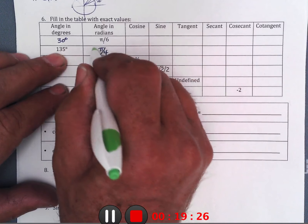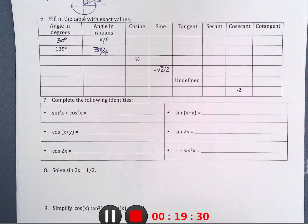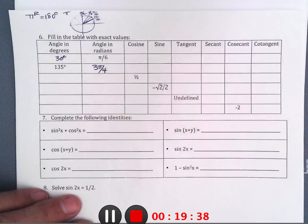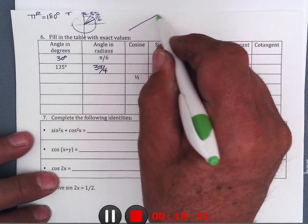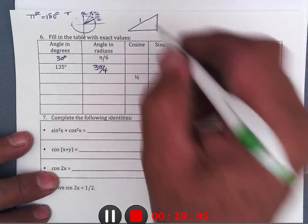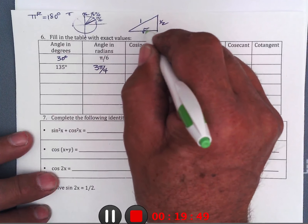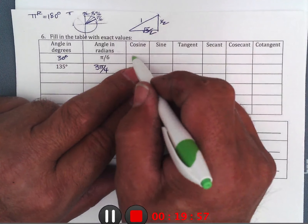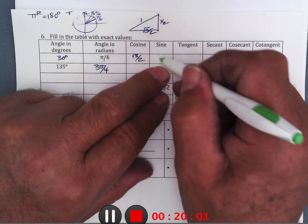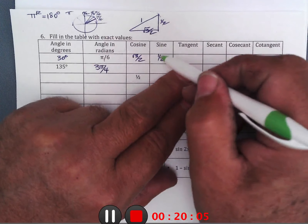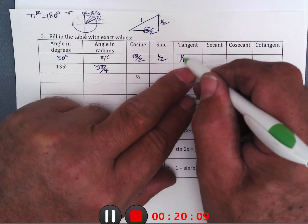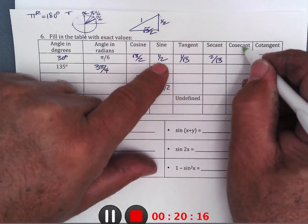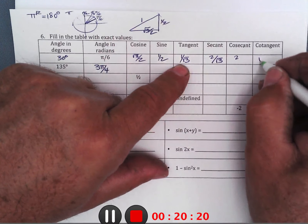For the 30-degree triangle on the unit circle, the hypotenuse is 1, the x-side is √3/2, and the y-side is 1/2. Cosine is the x-direction so cos(30°) = √3/2; sine is the y-direction so sin(30°) = 1/2; tangent is sine over cosine = 1/√3; secant is 2/√3; cosecant is 2; cotangent is √3.